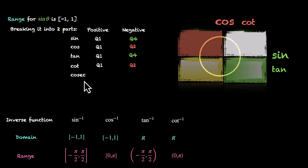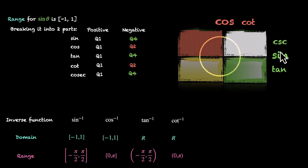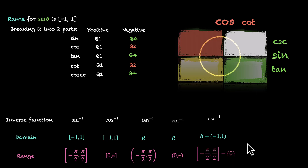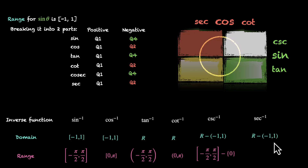For cosecant — cosecant is the reciprocal of sine, so it's positive where sine is positive and negative where sine is negative. We copy what we have for sine: Q1 for positive and Q4 for negative. So cosecant inverse has domain R minus (−1 to 1) and range minus π/2 to π/2, excluding zero. For secant inverse, cosecant inverse has domain R minus (−1 to 1) and range zero to π, excluding π/2.